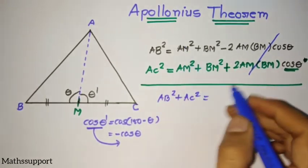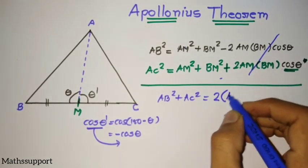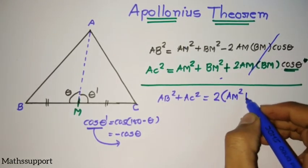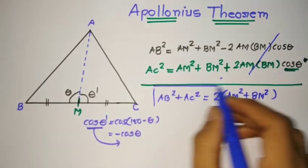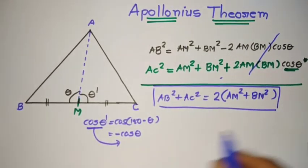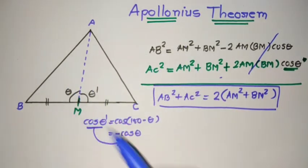Taking 2 as common, it's AM² + BM². This is Apollonius Theorem. This is a very simple proof using cosine formula for both triangles. That's all.